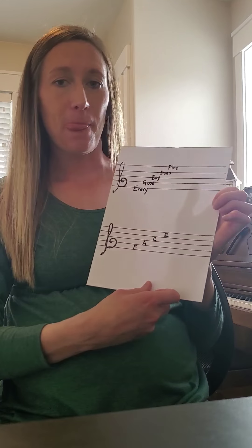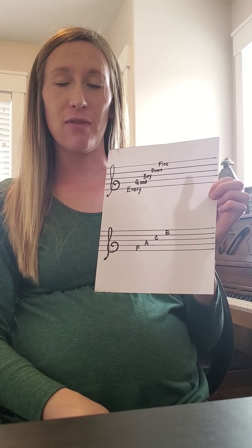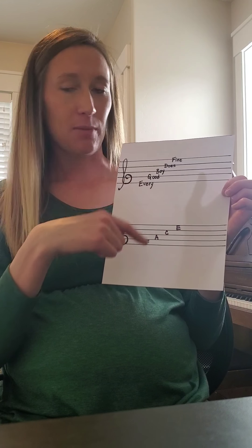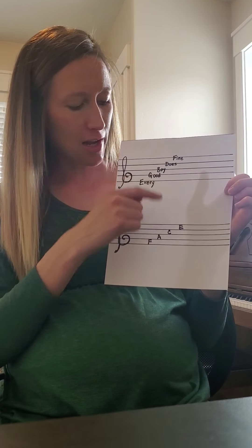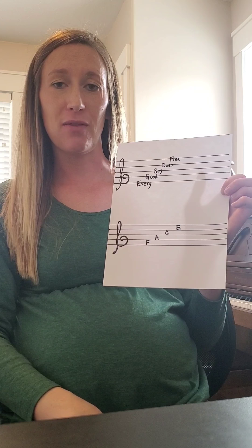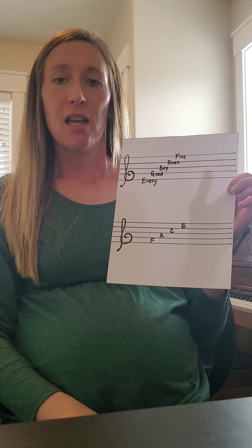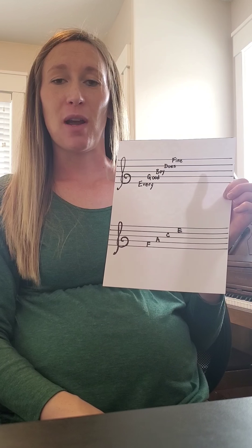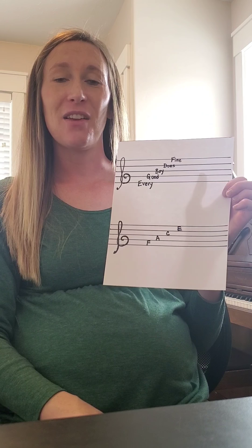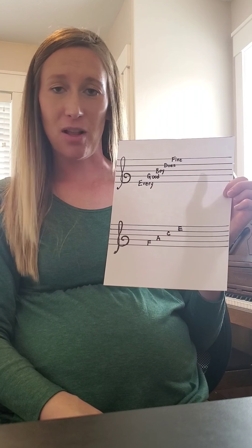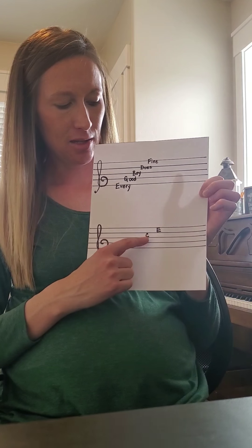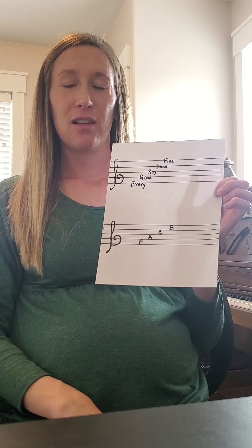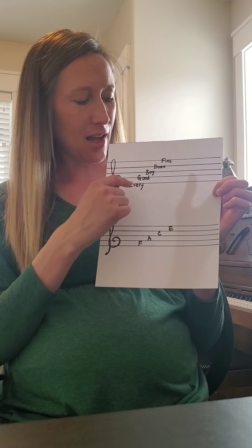Now we're going to talk about the spaces. In between each line there's a space, and those also have names. You can do this on the same staff on your paper — you don't have to write out five more lines. The way we remember the spaces is with a rhyme: a word that rhymes with space is face, and we spell out the word FACE. Start at the bottom: F, A, C, E. Those are the names of the spaces.